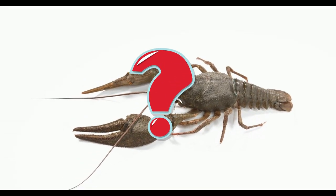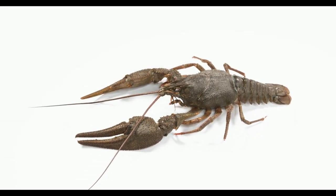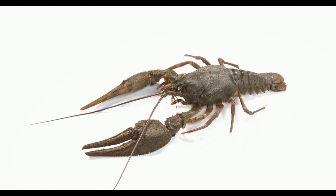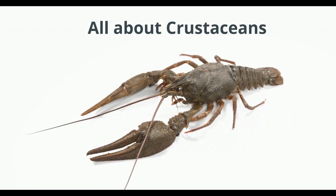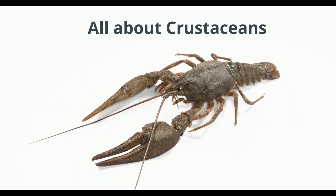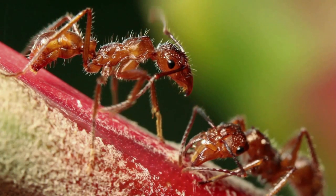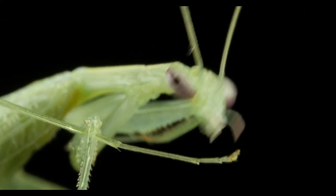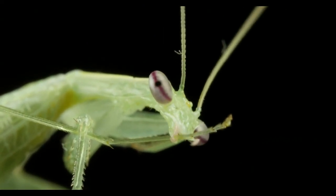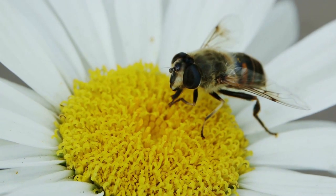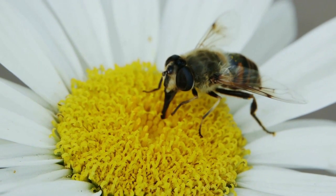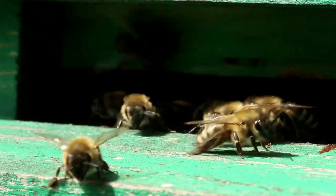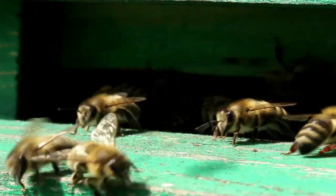A lobster belongs to the phylum Arthropoda and the subphylum Crustacea. Arthropods are the most abundant category of animals on earth, and it is estimated that between 75 to 85% of all animals on earth belong to this category.